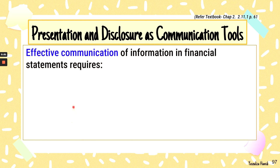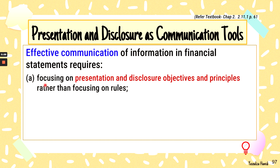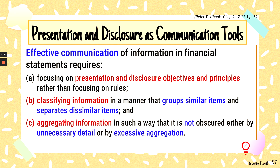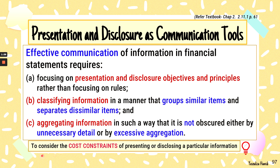What is effective communication in financial statements? This chapter requires the reporting entity to focus on presentation and disclosure objectives and principles rather than focusing on rules. It also requires classifying information in a manner that groups similar items and separates dissimilar items, aggregating information so it is not obscured by unnecessary detail or excessive aggregation, and also considering the cost constraint so that benefits always outweigh the cost.